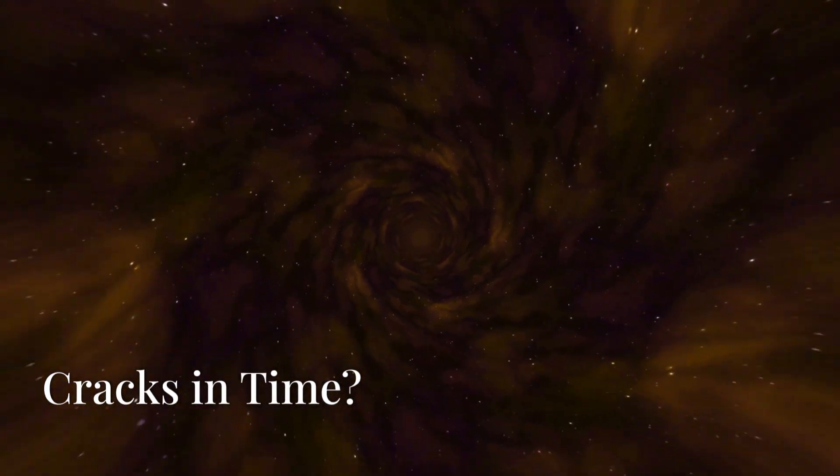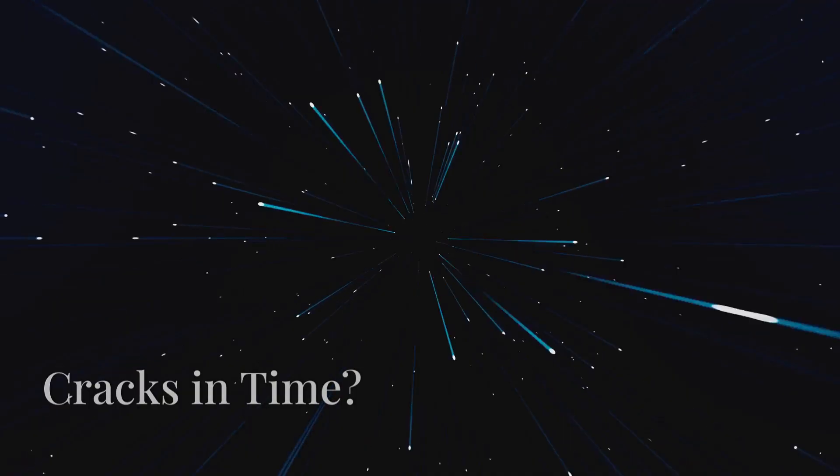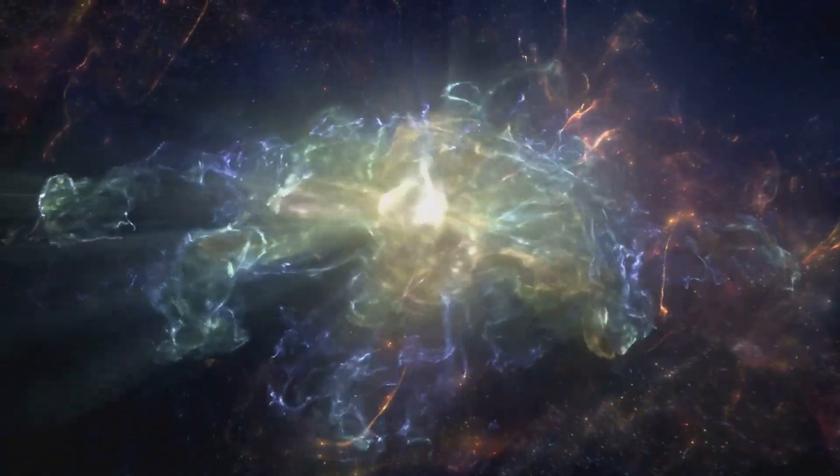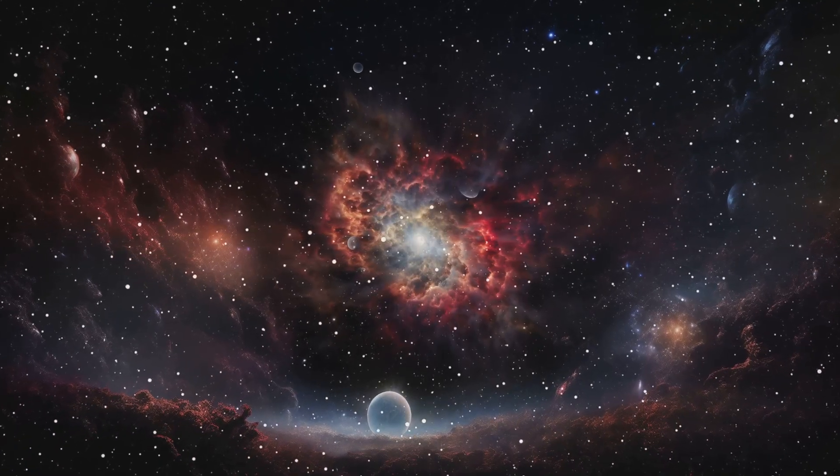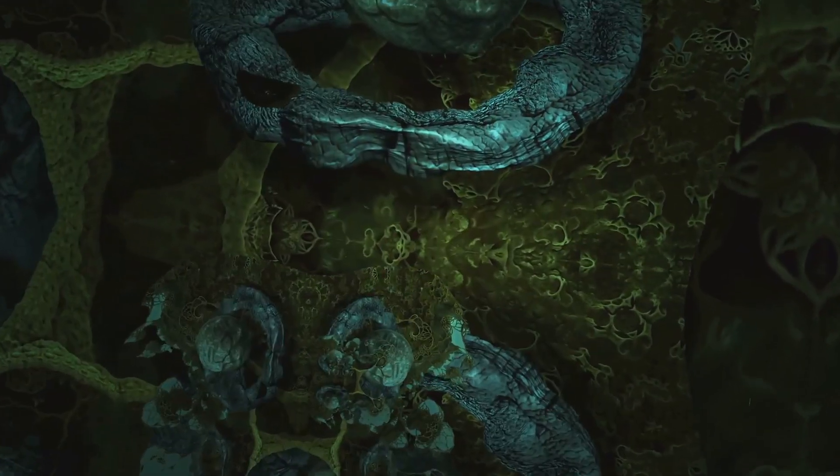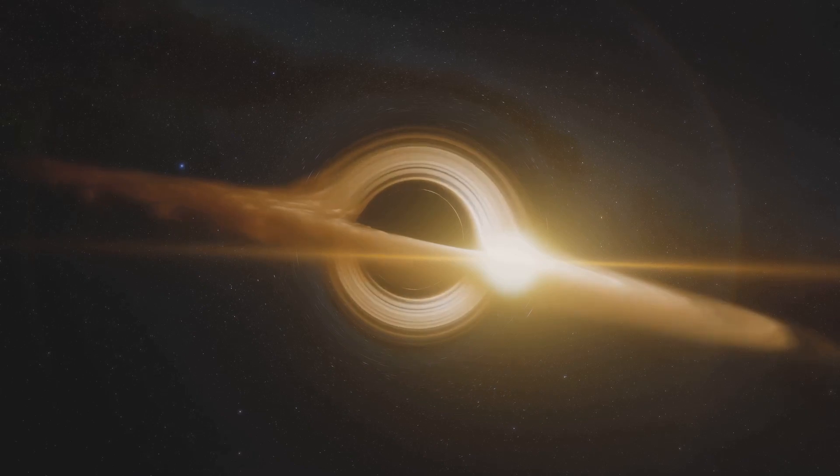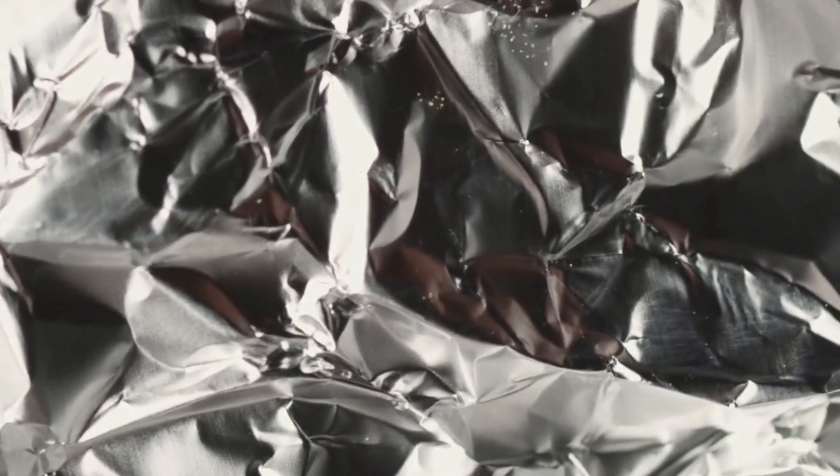Now let's venture into the realm of the truly exotic, where the fabric of space-time itself might be riddled with imperfections, like tiny cracks in the cosmic mirror. These hypothetical imperfections are known as cosmic strings, remnants from the earliest moments of the universe, thinner than an atom but potentially stretching across vast distances. Their gravity would be so intense that they would warp space-time around them, creating what you might call time wrinkles.